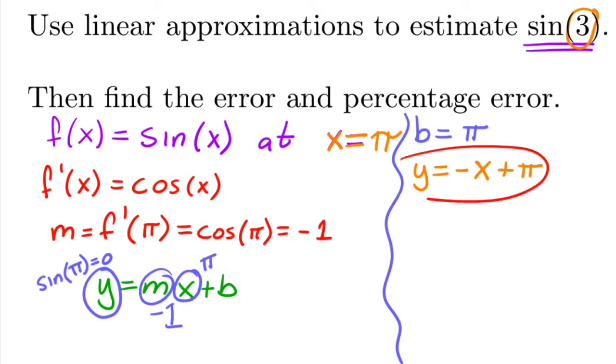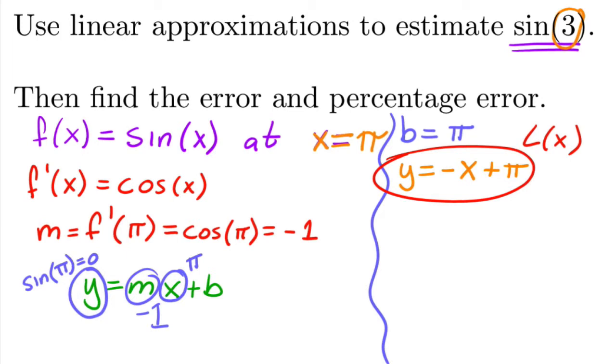Okay, so this is the linearization of sine of x at x equals π. So that's great. Okay, so now we can approximate sine of 3. Sine of 3 is approximately equal to plugging 3 inside of the tangent line, so it would be minus 3 plus π.